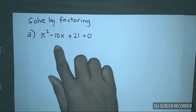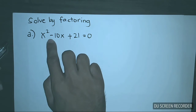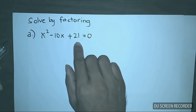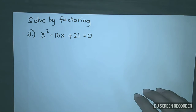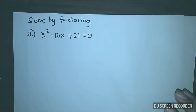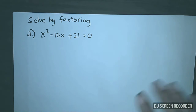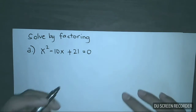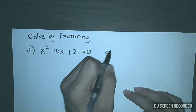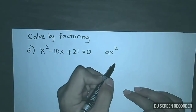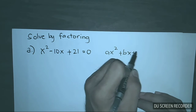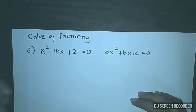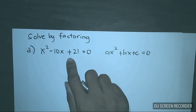I have here example letter A, which is x squared minus 10x plus 21 is equal to 0. The first step in solving this by factoring is to check whether this equation is in standard form. The standard form of a quadratic equation is Ax squared plus Bx plus C is equal to 0. This one is already in standard form.